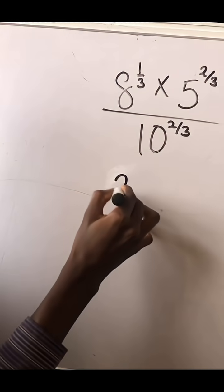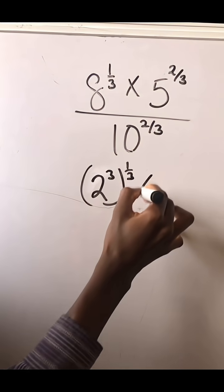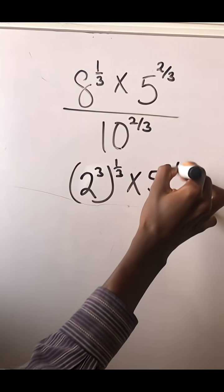Okay, you gotta do what? Listen up. 2 to the power of index form. So you got this times 5 to the power of 2 over 3.